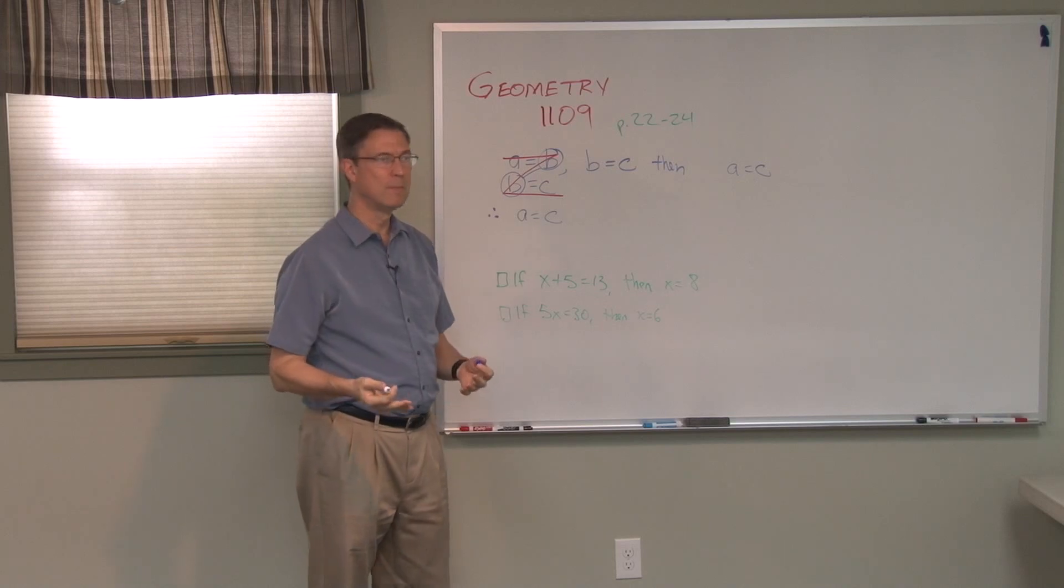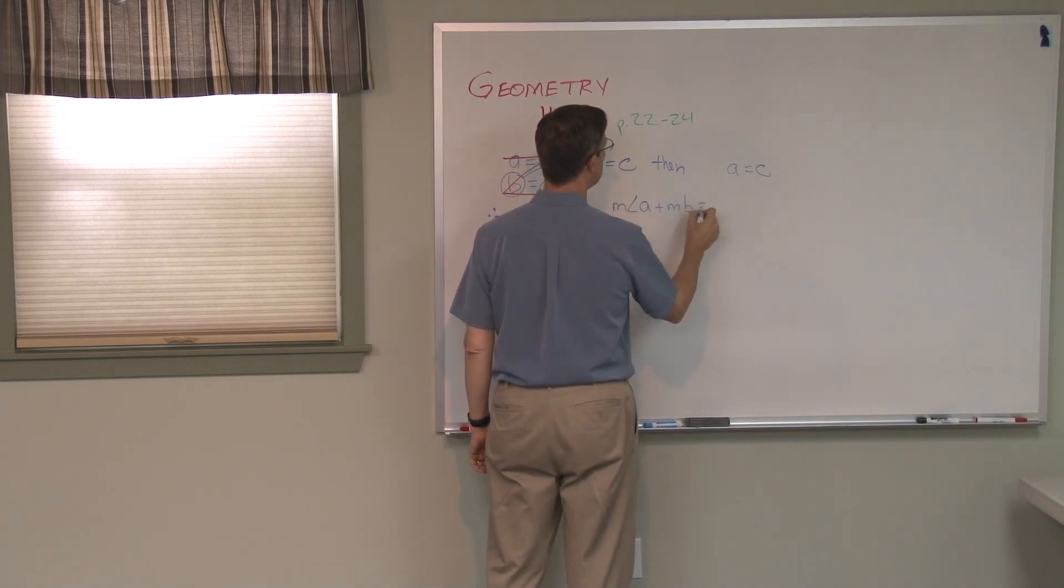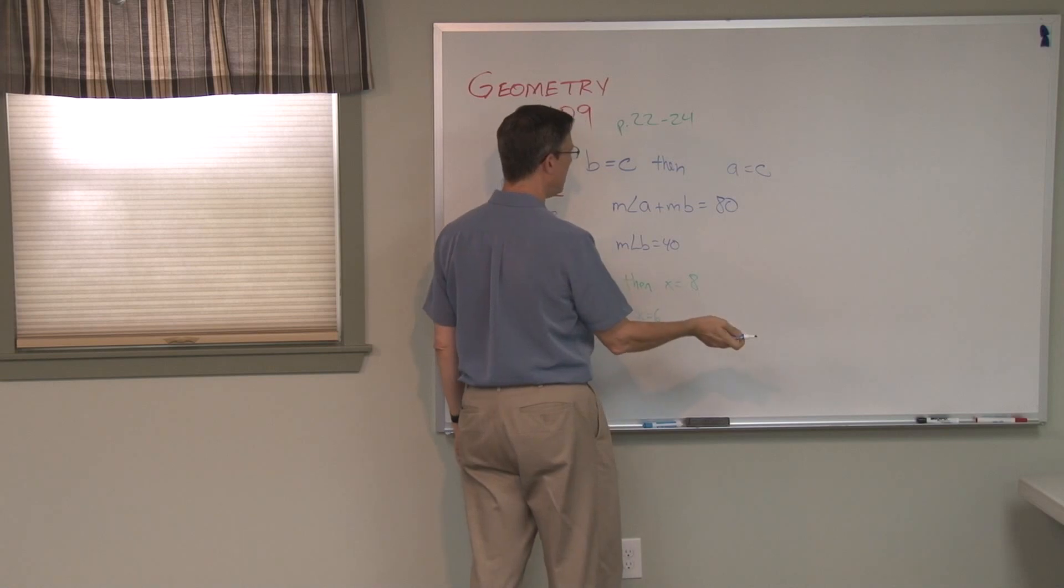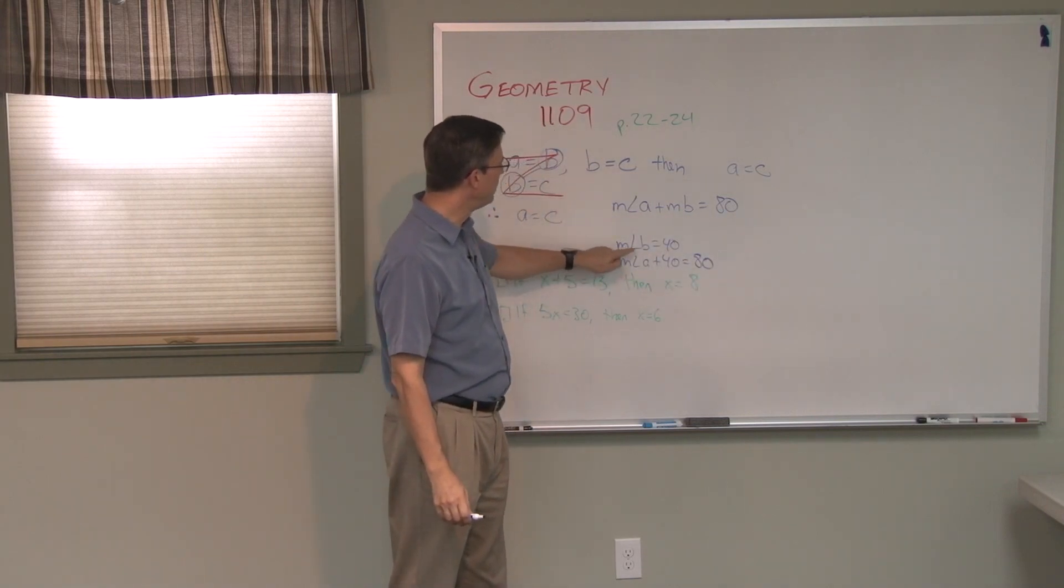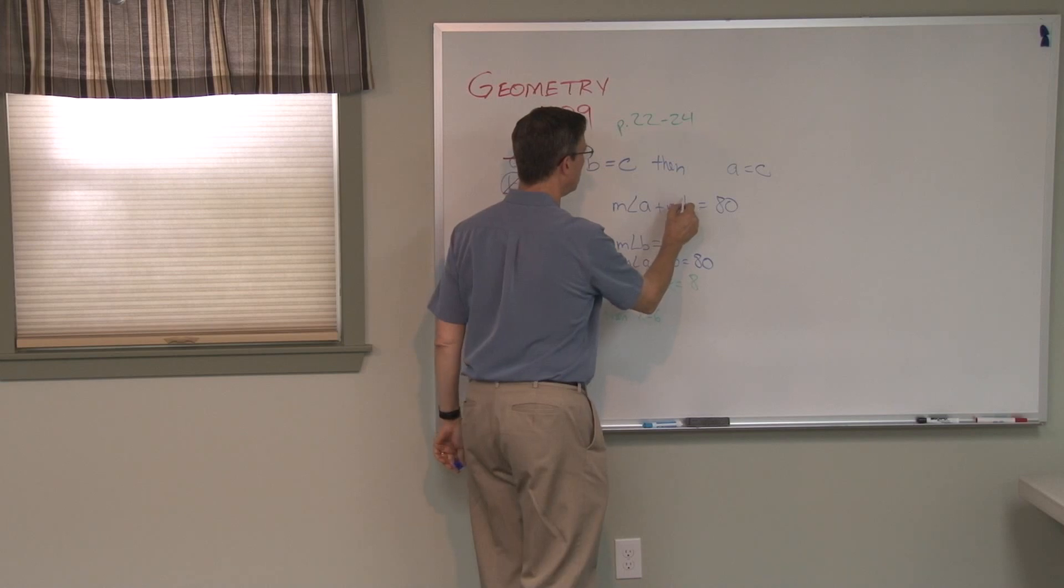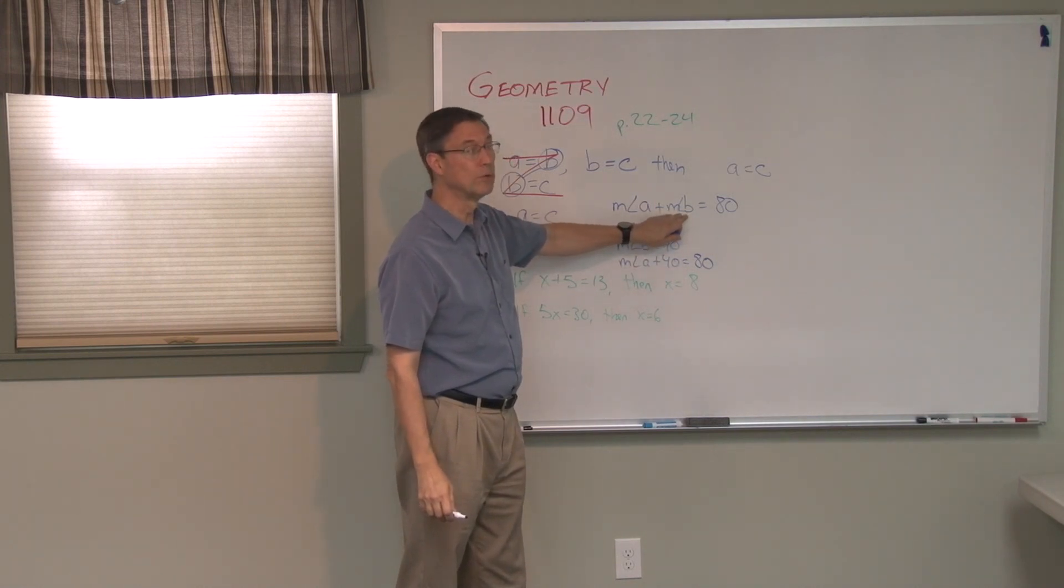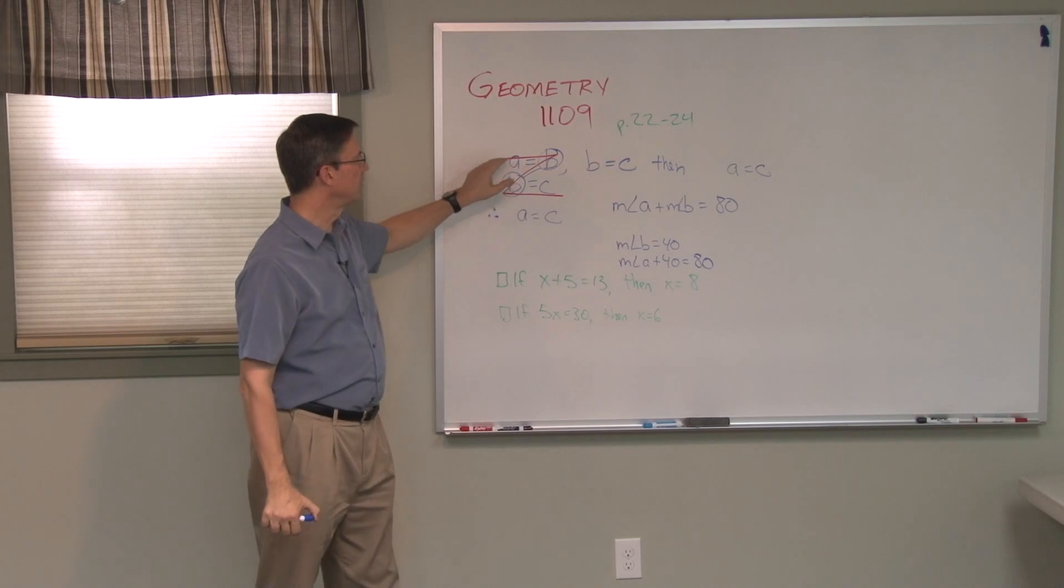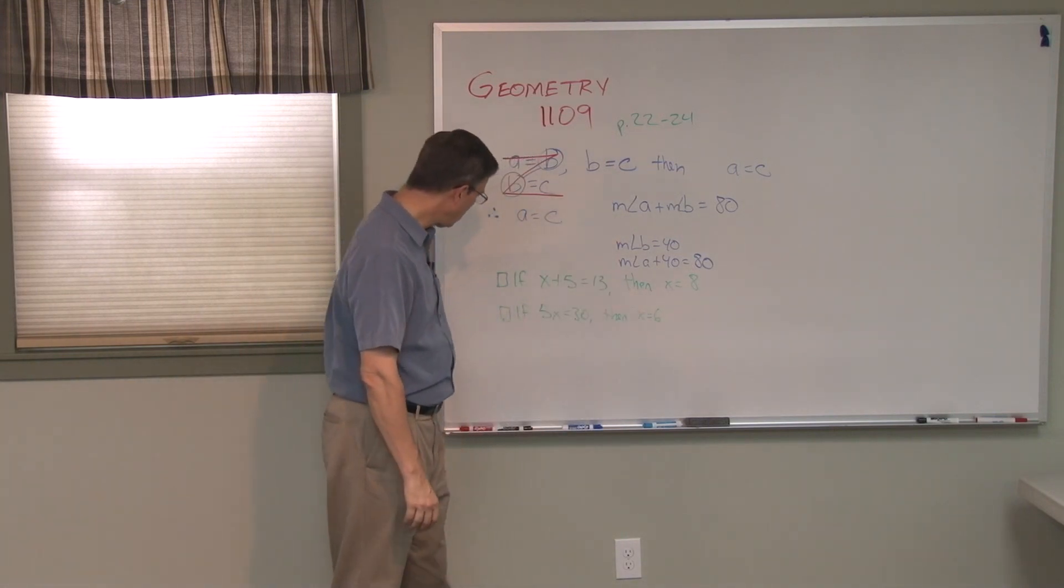The illustrations that might be substitution would be something like this. Angle A, measure of angle A, plus the measure of angle B equals 80 degrees. And then if we say the measure of angle B is 40, then we can go back and say, measure of angle A plus 40 equals 80. So what I did is I had a statement here, but then I took one thing, this angle B, measure of angle B is 40, so then I can substitute that 40 in place of what it is equal to up in the other statement. So that is substitution. So again, transitive, look for the Z pattern. Any other case where something that's equal is being substituted is indeed substitution.